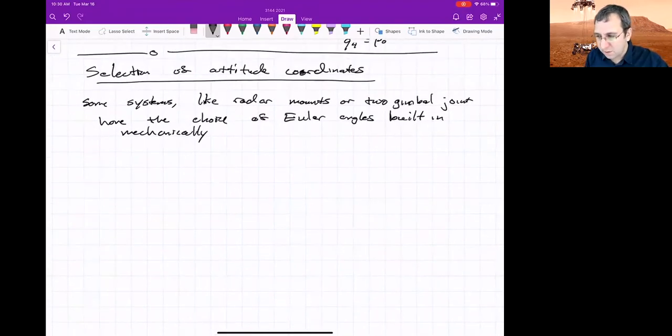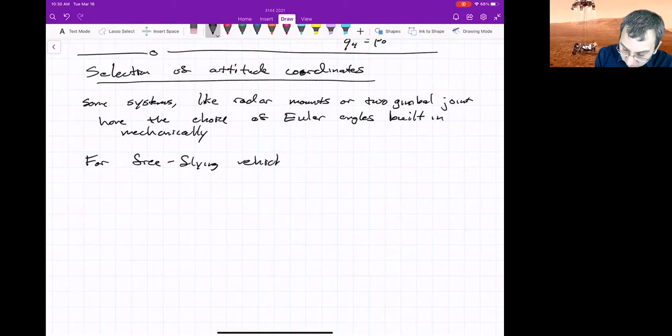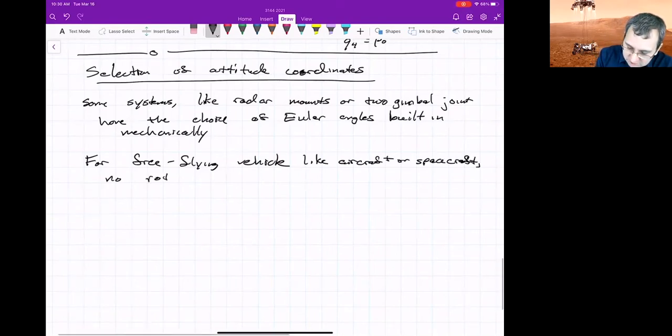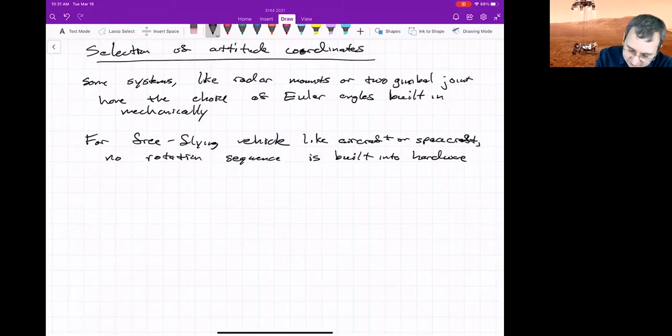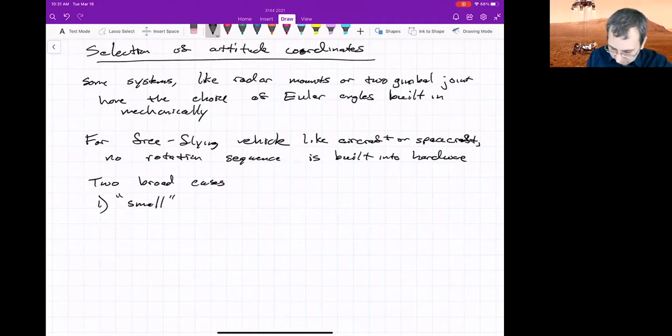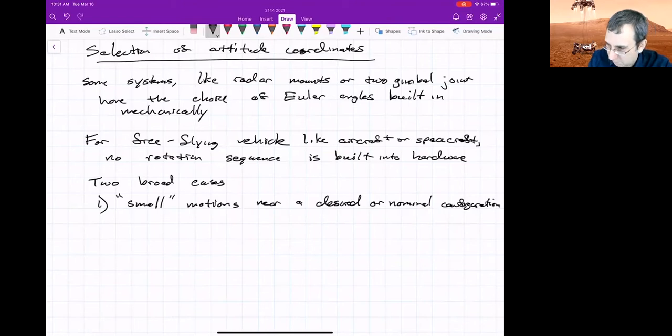When you have a spacecraft, a free flying vehicle like an aircraft or spacecraft, you have choices. No rotation sequence is necessarily built into the hardware. And so then you can think of kind of two broad areas: if you have small motions near desired equilibrium, and I'll put small in quotes because it's up to some judgment. So if you've got small motions near a desired or nominal configuration, that's sort of one thing to consider.